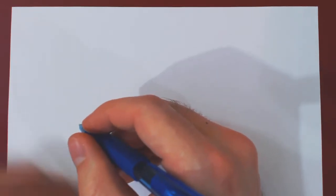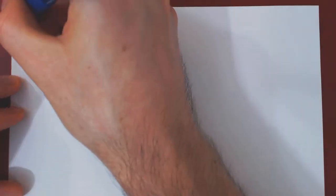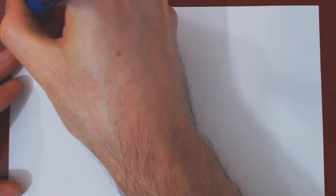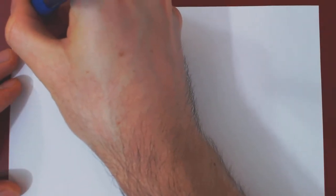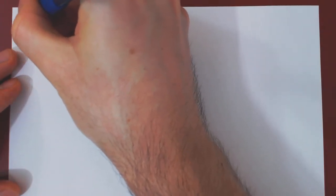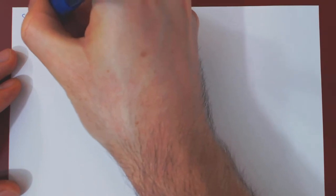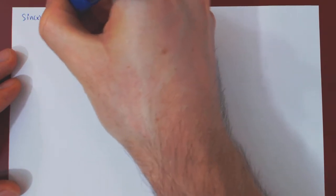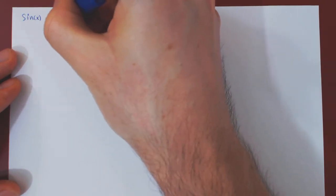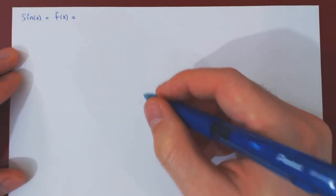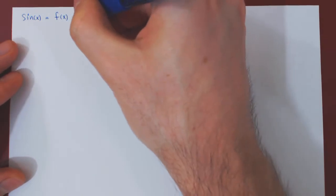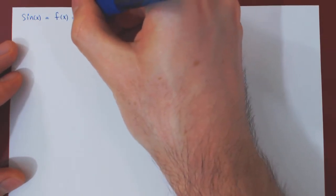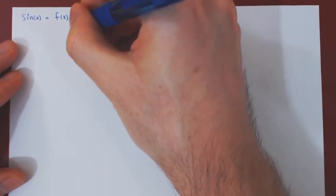In this video, we will find the Maclaurin series of sine of x. Our function here is sine of x — let's call it f of x — and we know the Maclaurin series of f of x is given by the following formula.